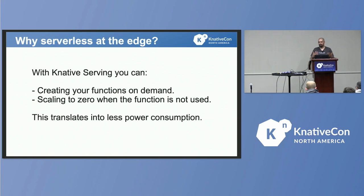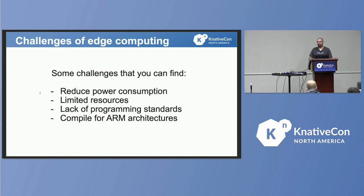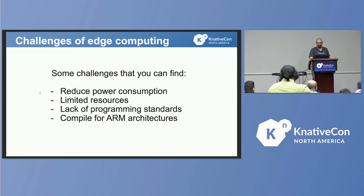When you are using serverless at the edge, you are going to reduce the amount of power used in your devices — less power consumption in general: less power, less CPU, less RAM. At the edge, devices may not have enough power — maybe they use batteries, or a solar panel. The challenges at the edge rely on power consumption, limited resources (RAM, storage, CPU), and a lack of standards for distributed systems. ARM processors don't use a lot of energy, making them popular for edge use cases.